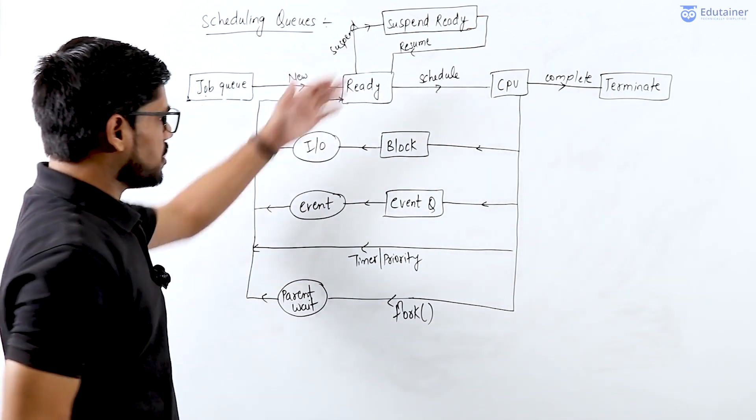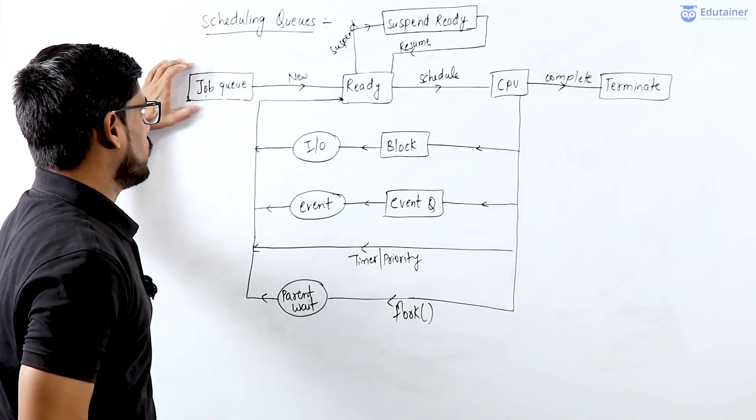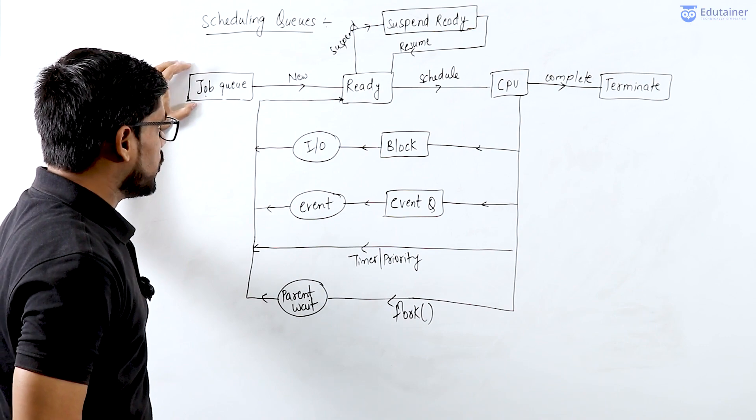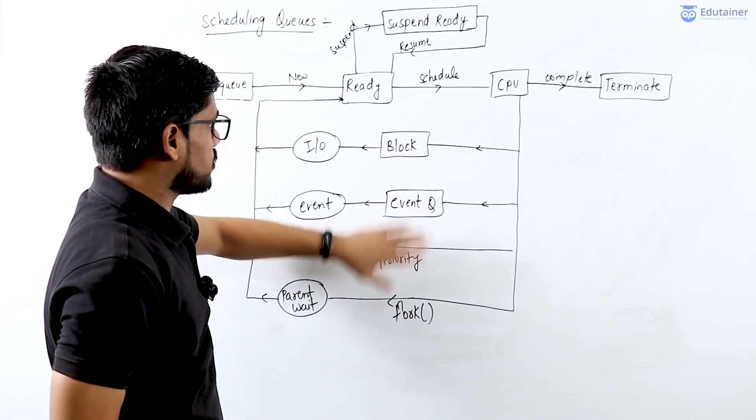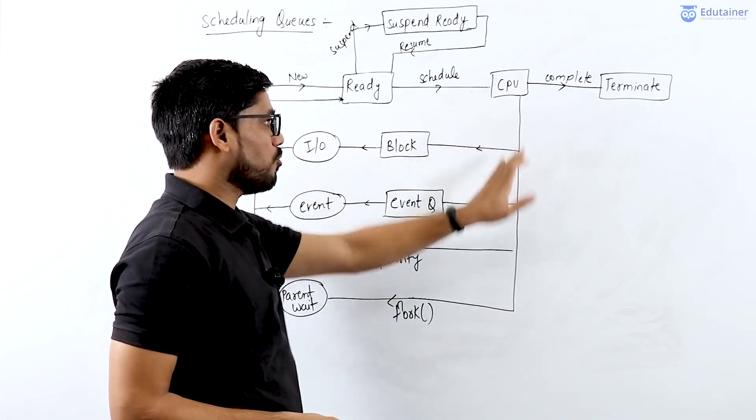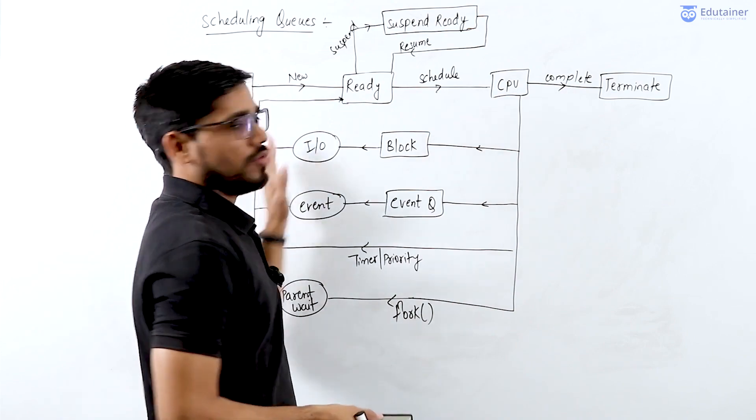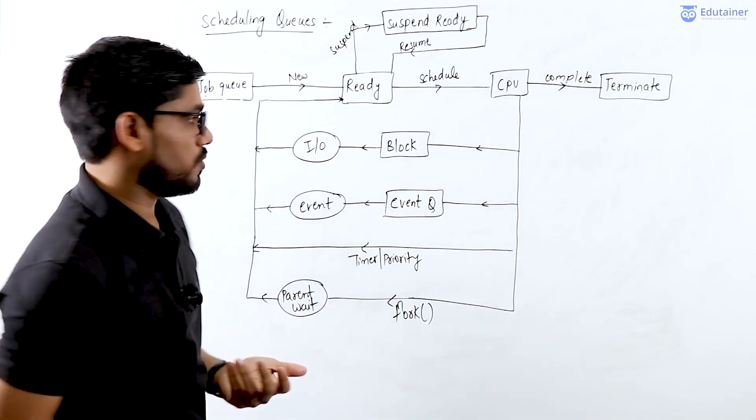It's the same as the state transition diagram, but I'll show you the practical scenario where the queue data structure is used for scheduling. There are some events or interrupts for which a process will be forcefully removed from the CPU and wait either in a suspend wait or suspend ready state.